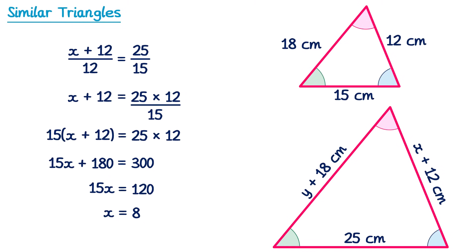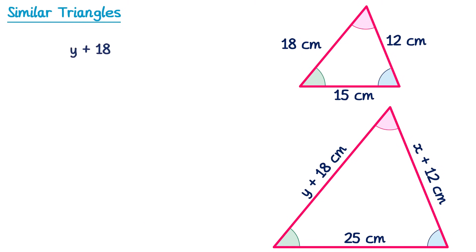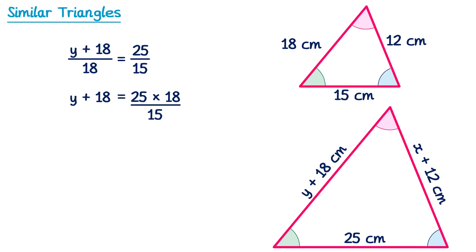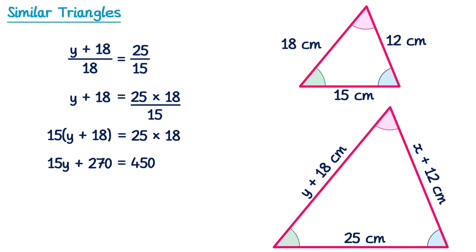So x is 8cm. Now for y: we write (y plus 18) over 18 equals 25 over 15. Multiplying both sides by 18 gives y plus 18 equals 25 times 18 over 15. Multiplying both sides by 15 gives 15(y plus 18) equals 450. Expanding: 15y plus 270 equals 450. Subtracting 270 from both sides gives 15y equals 180, and dividing by 15 gives y equals 12.